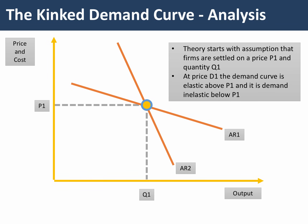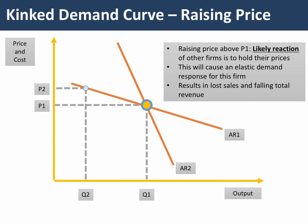Here's how to build the kinked demand curve model. We have two demand curves — average revenue curves: AR1 which is fairly elastic, and AR2 which is fairly inelastic — with a kink at the intersection between the two. The theory starts with firms having settled on a particular price P1 and quantity Q1. If a firm raises their price to P2, the likely reaction of other firms is to keep their prices as they were, taking market share away. With rivals holding prices down, the acting firm sees a significant fall in demand — sales fall from Q1 to Q2 and total revenue goes down.